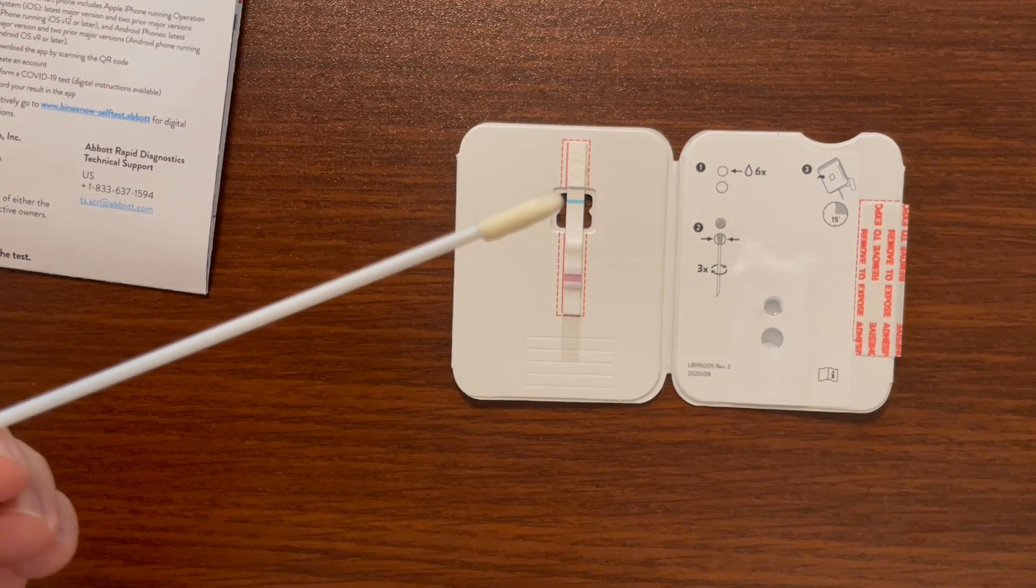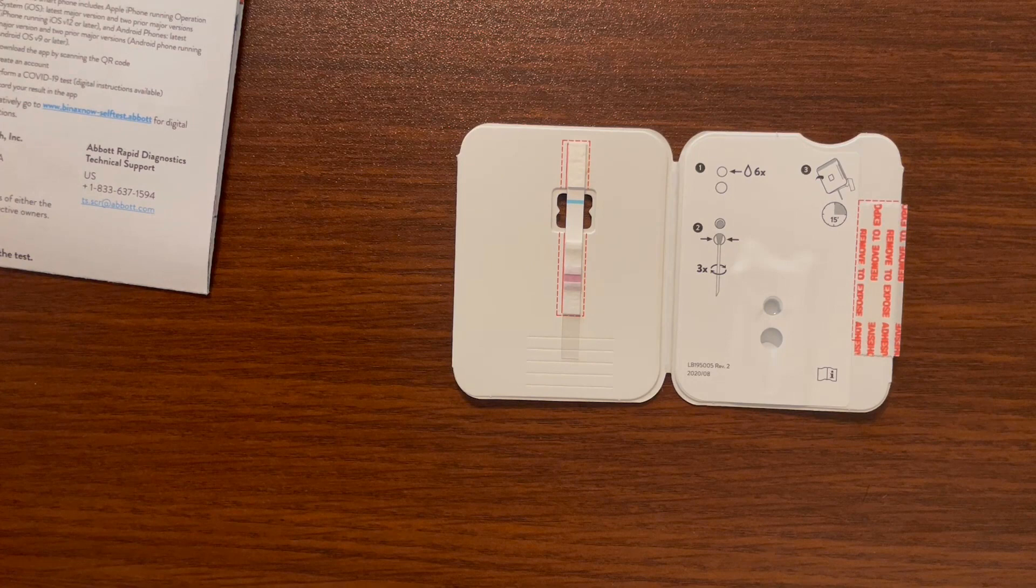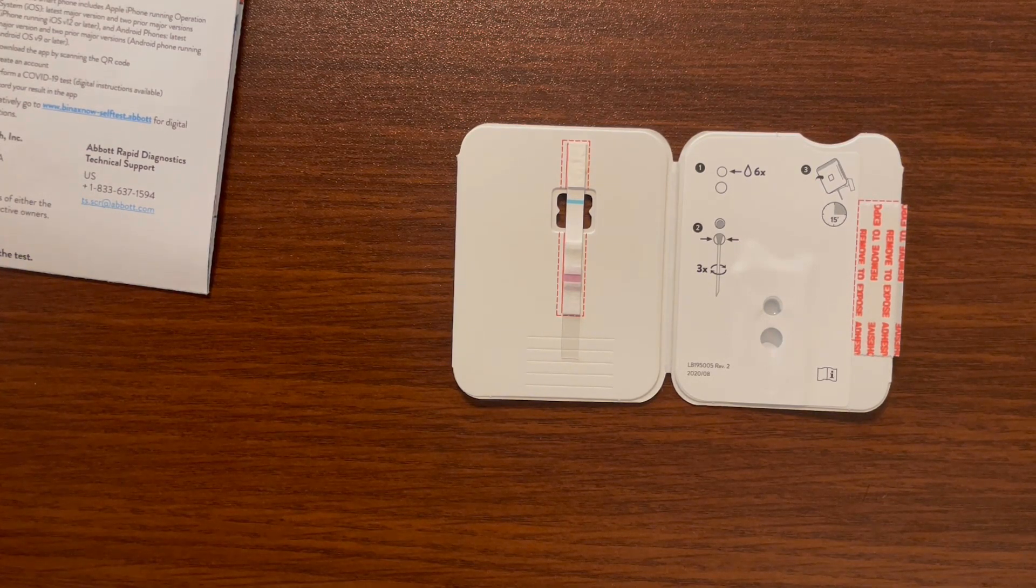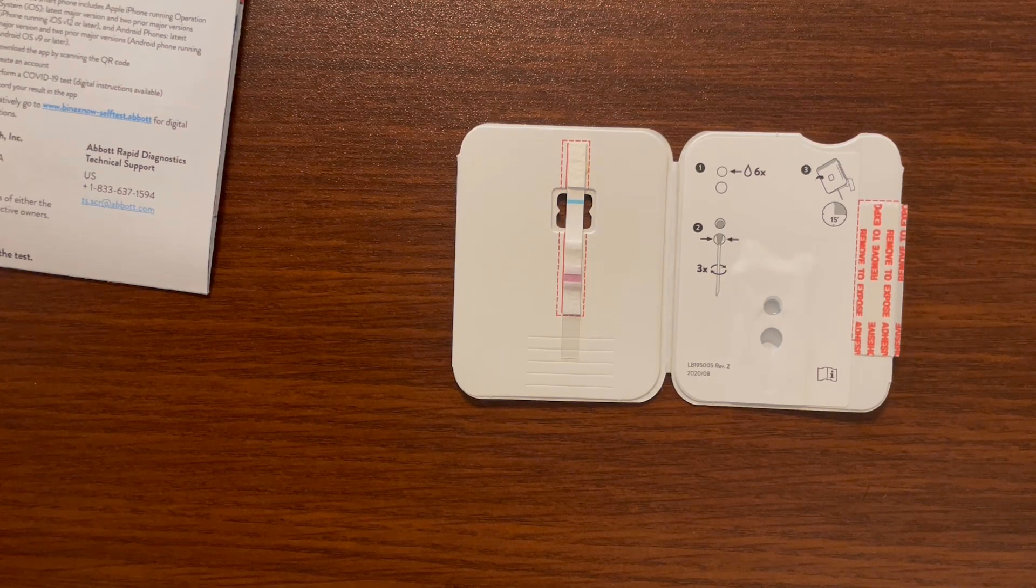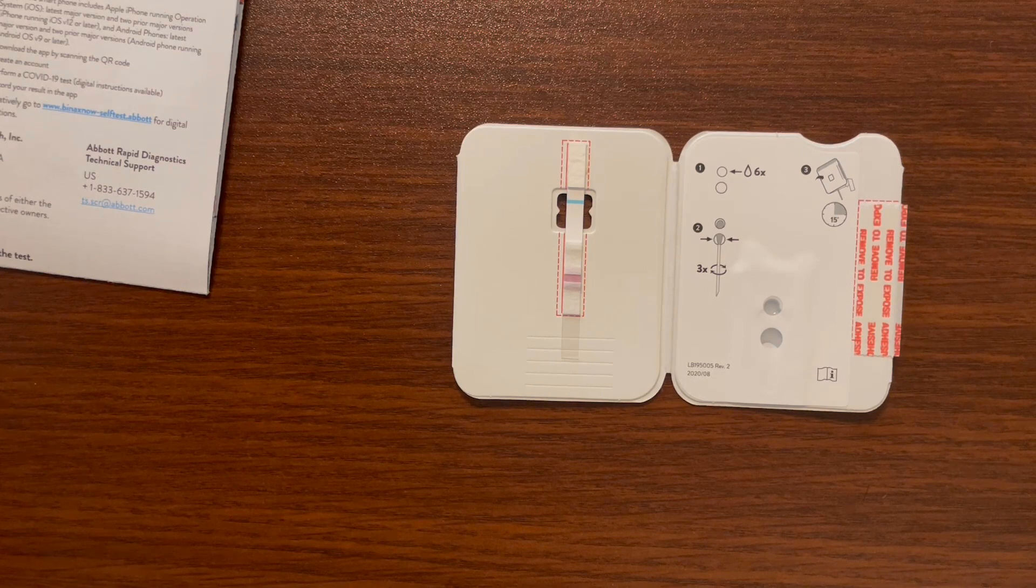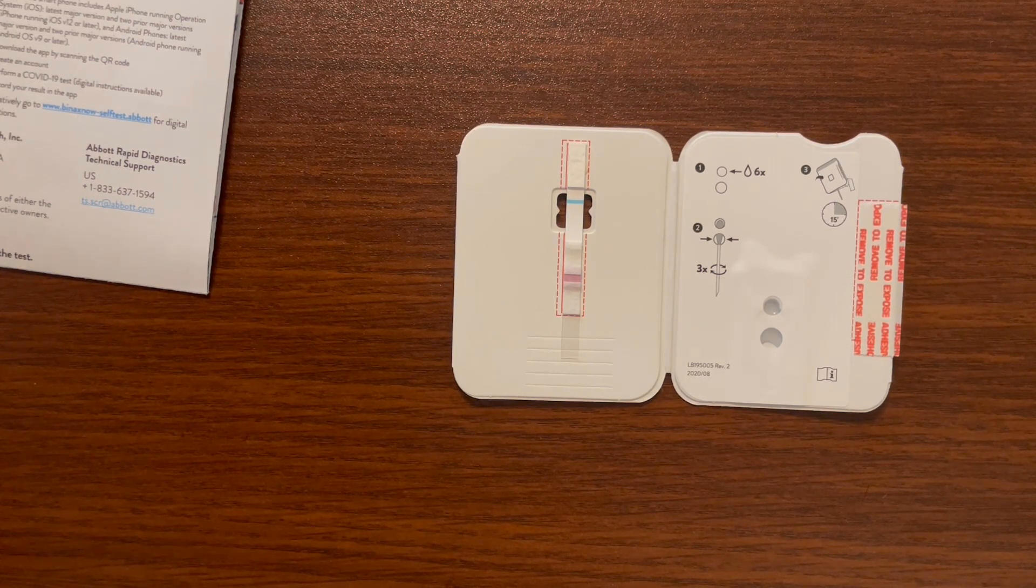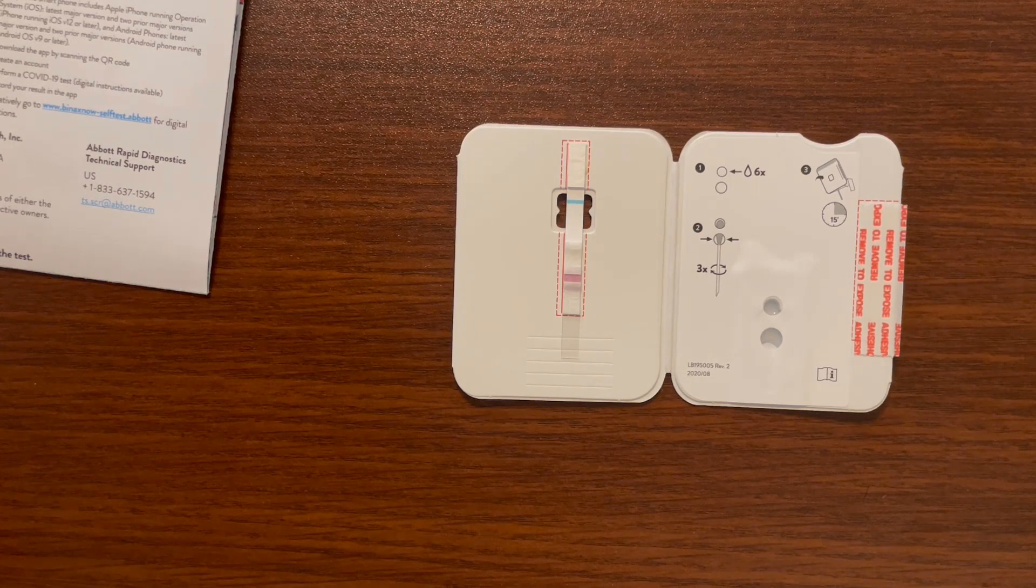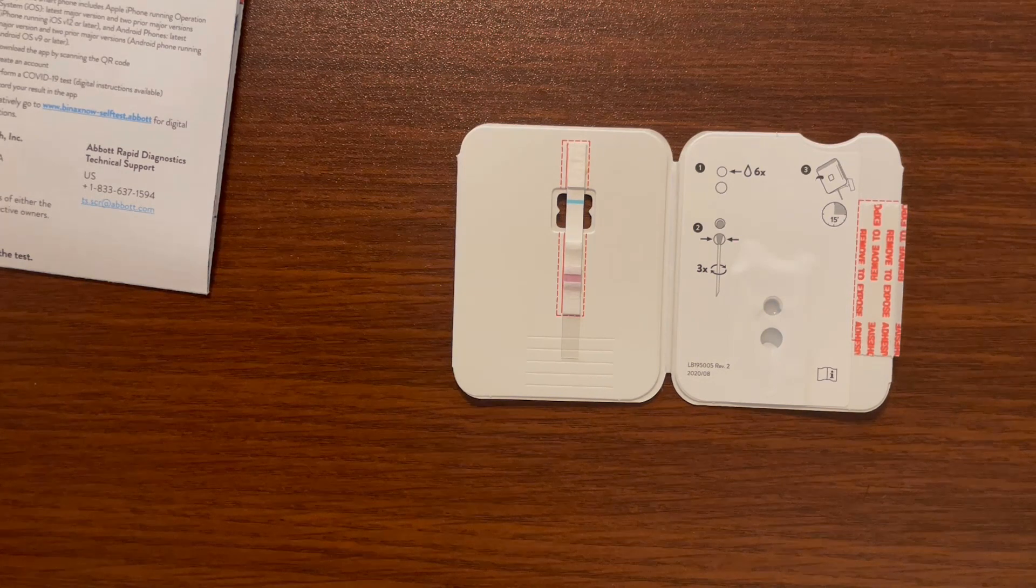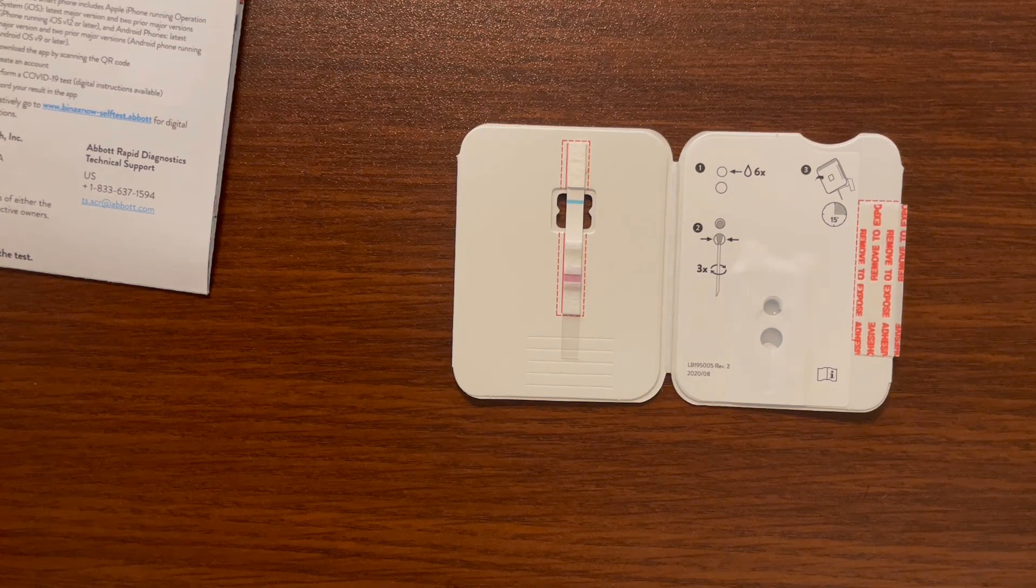Now what you're going to do is swab your nostrils, going up about three-fourths of an inch, and you're going to swab each nostril five times. Do five big circular motions and it should be swabbed for a total of 15 seconds. Do that for one nostril and then repeat for the other nostril. You're going to swab both nostrils for 15 seconds each.